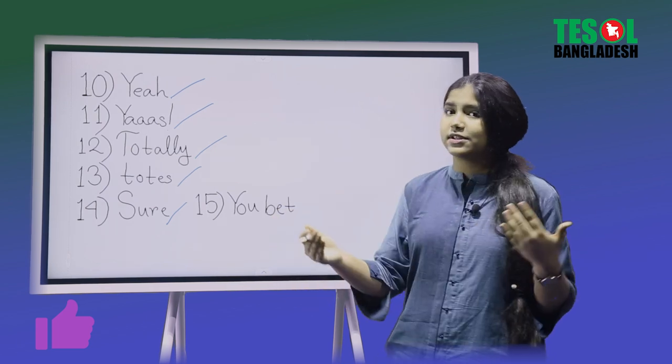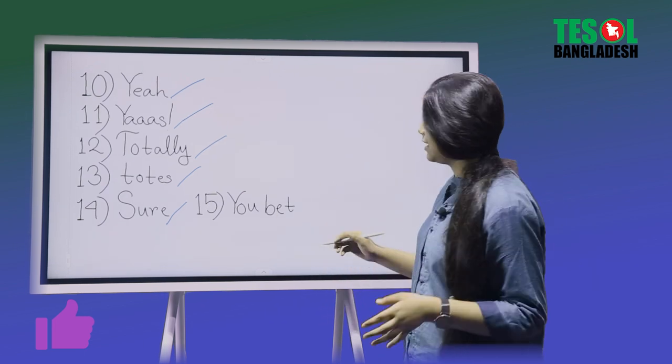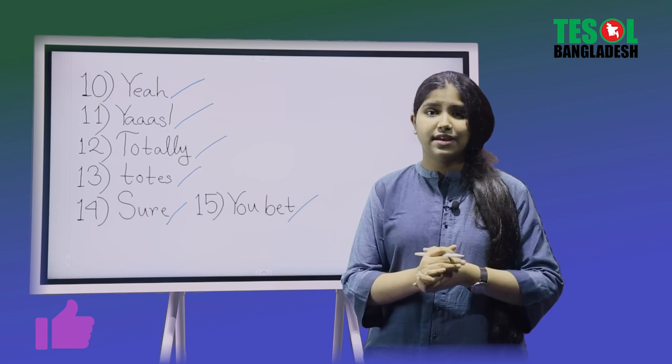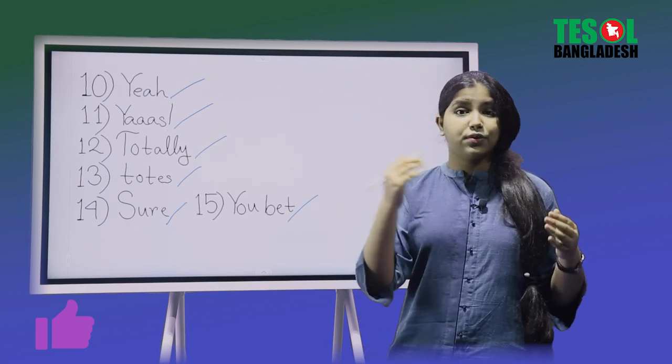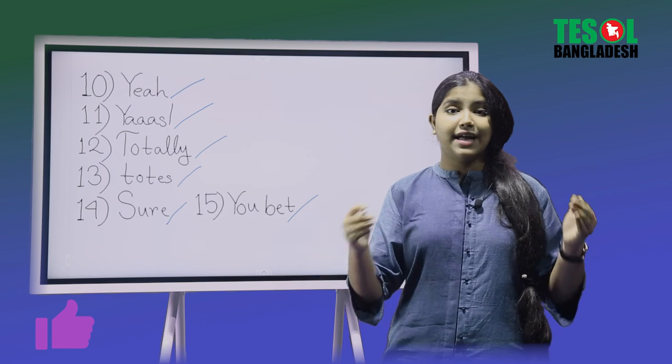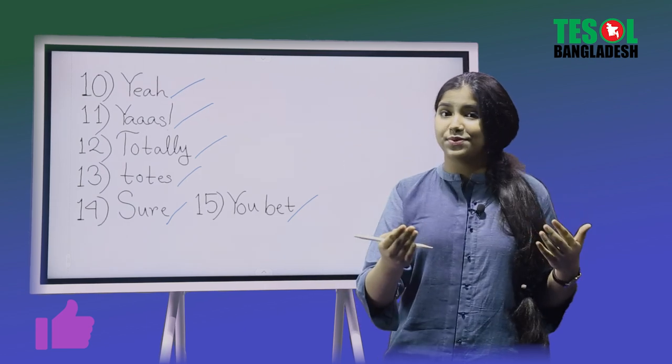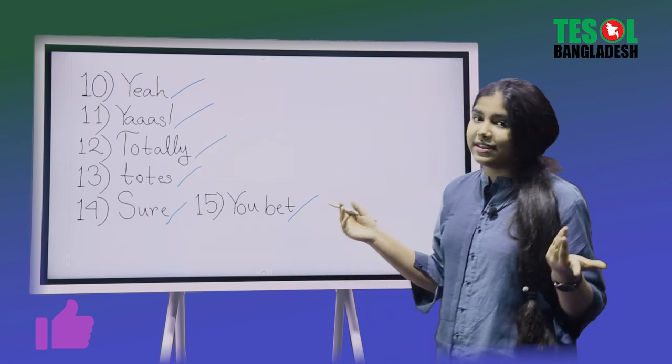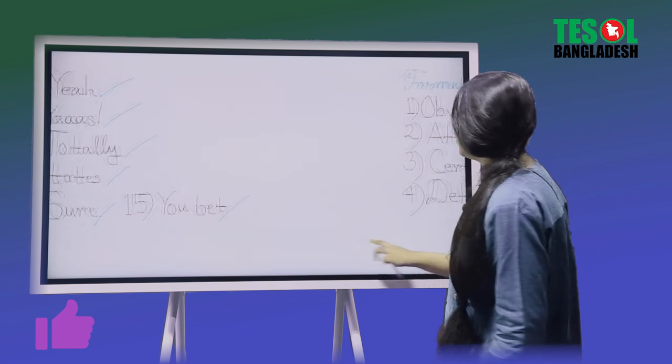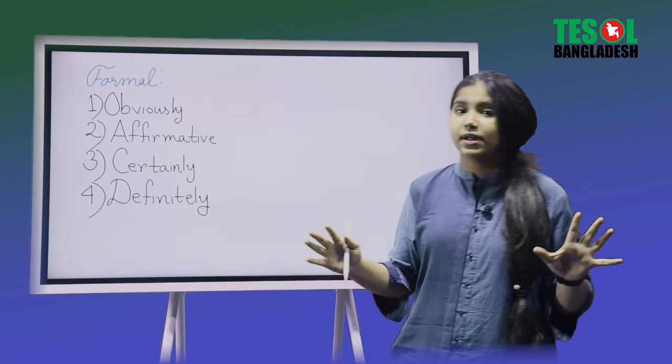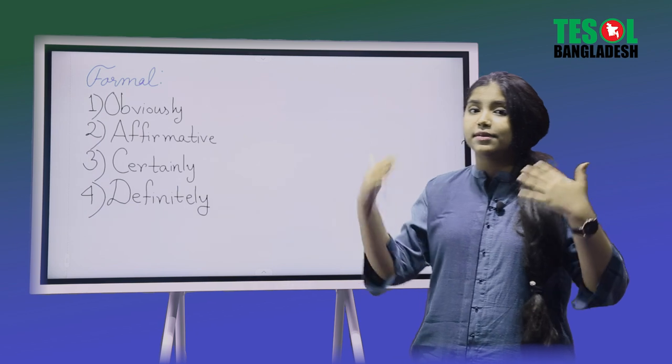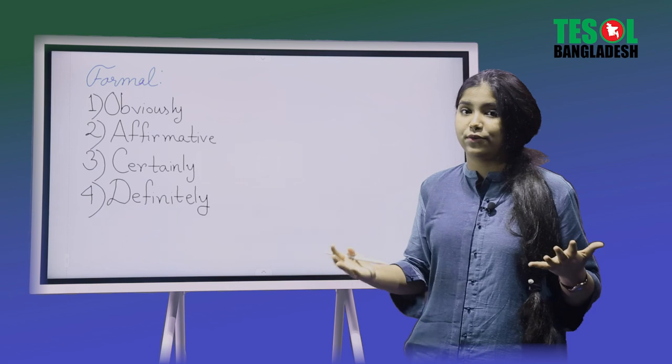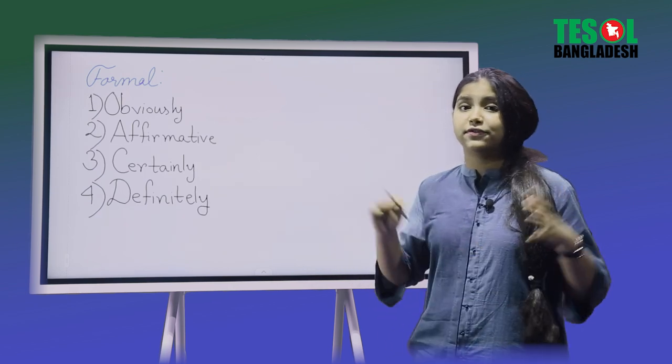Number fifteen: you bet. So someone asks you, are you willing to go to the cinemas? And then you say you bet. It means that you guess what I'm trying to say. That means is actually a yes. So you hear what I'm saying? This is really easy guys. So don't forget to learn them. Just learn them, just hear them again and again. Do not memorize anything. Just try to understand what I'm talking about. Now we're going to move on to the formal words.